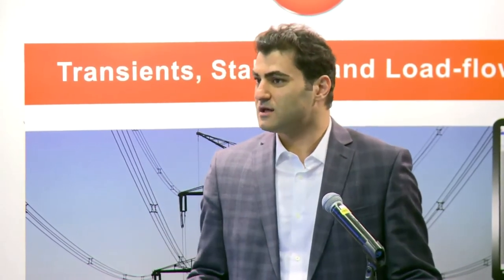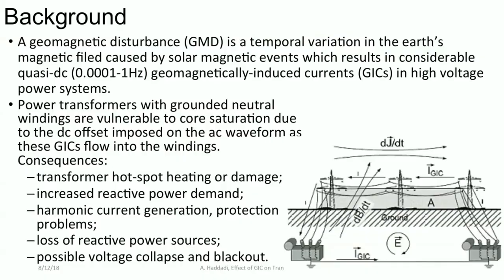From the viewpoint of a power system engineer, these changes can be modeled as a moving box of currents above the Earth's surface — about 100 kilometers above the surface — and the magnitude of this current could be up to 1 million amps. This current has a very small frequency, in the range of millihertz.